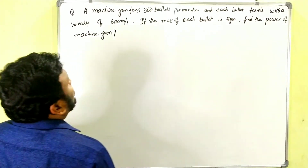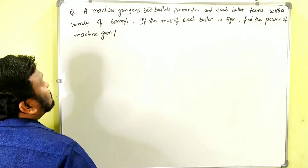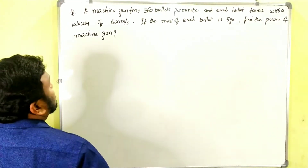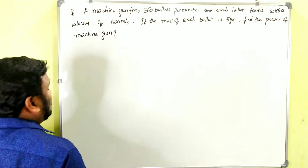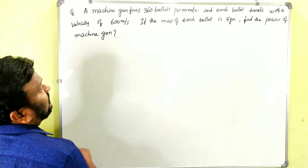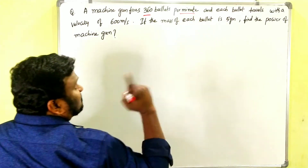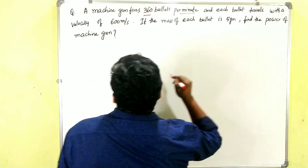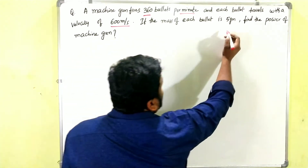A machine gun fires 360 bullets per minute and each bullet travels with a velocity of 600 metres per second. The mass of each bullet is 5 grams. Find the power of the machine gun. So: the gun fires 360 bullets in one minute, which is 60 seconds, and each bullet travels at 600 metres per second.